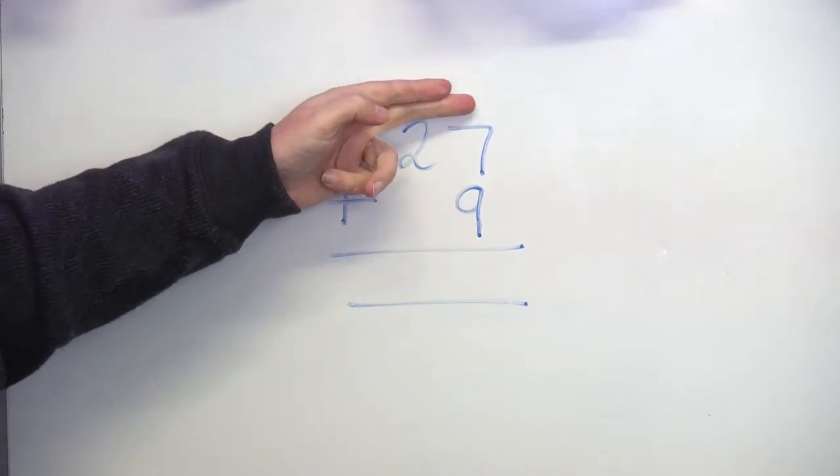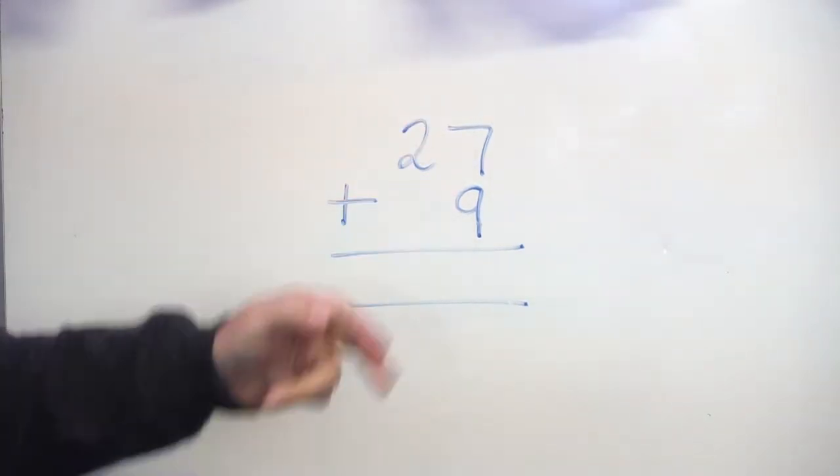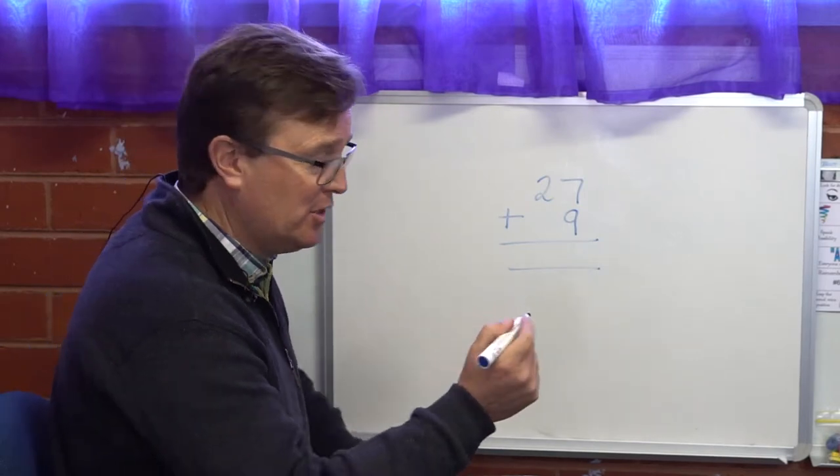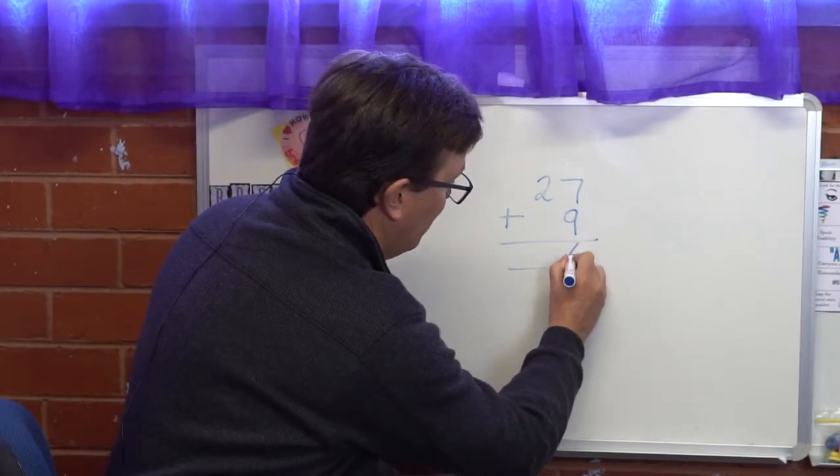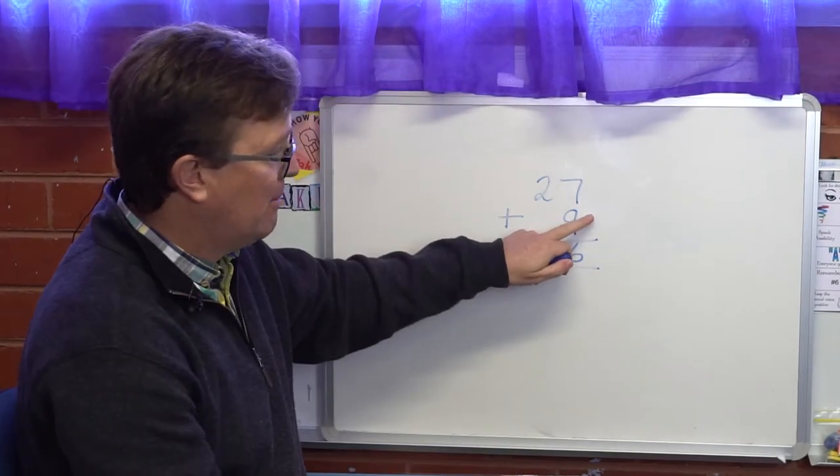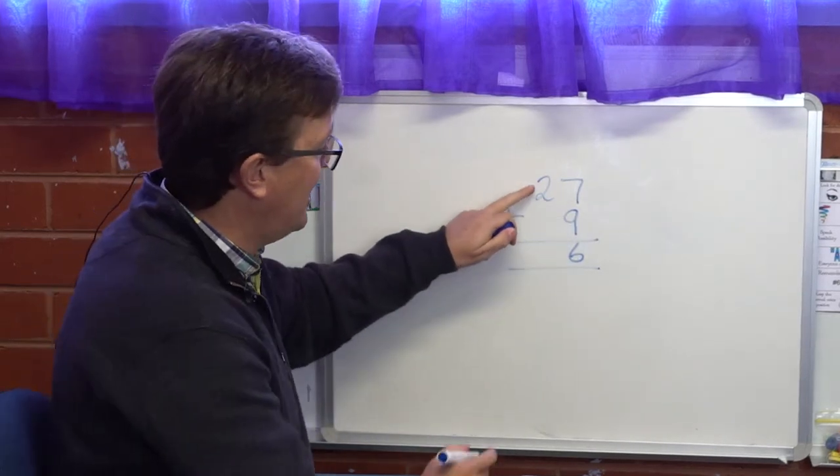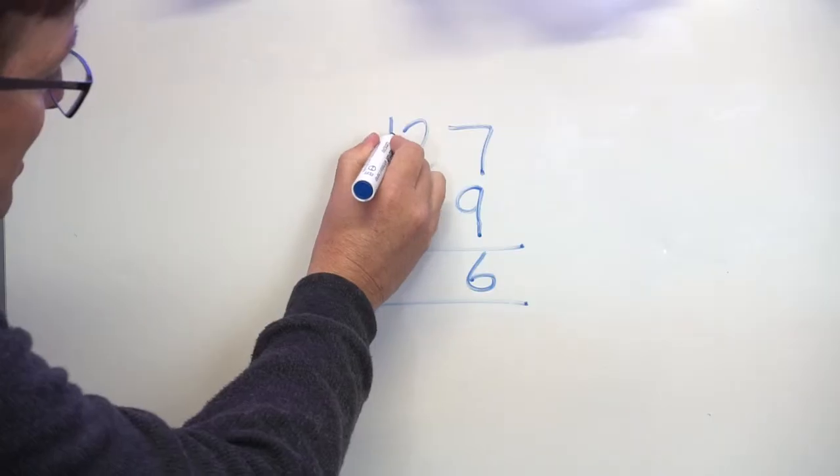When I add 7 ones and 9 ones together, that gives me 16. So what I need to do is put my 6 in my ones column, but the number is 16, so I have to carry my 10 into the tens column over here.